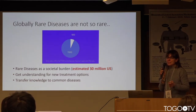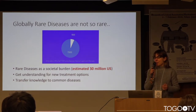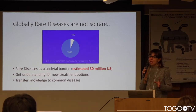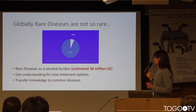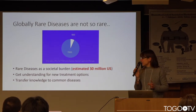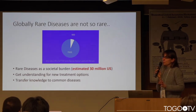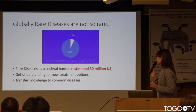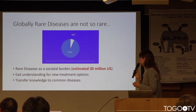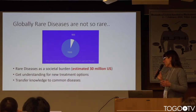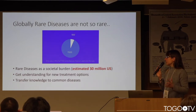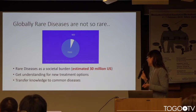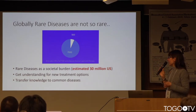Rare diseases affect few people individually, but globally — because there are around 7,000 recognized rare diseases — it is a real societal burden, estimated to affect 30 million people in the U.S. alone. Only five percent of these diseases have an FDA-approved treatment. The value of this work is trying to make reviews a valuable resource for hypothesis generation, to speed up the development of new treatments for these rare diseases. Also, knowledge gained from rare diseases can be transferred to common diseases.